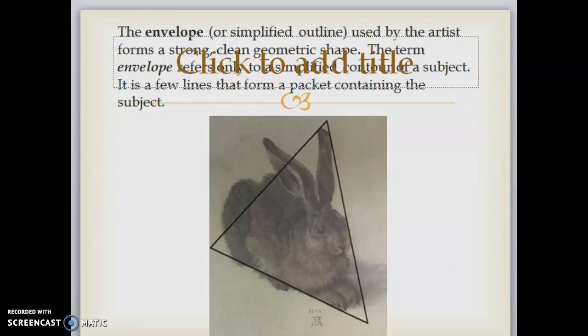The envelope, or simplified outline used by the artist, forms a strong, clean geometric shape. The term envelope refers only to a simplified contour of a subject. It is a few lines that form a packet containing the subject, as in the way this triangle is containing the rabbit.